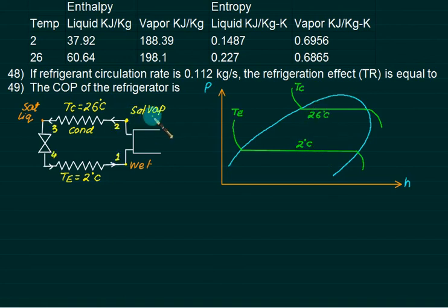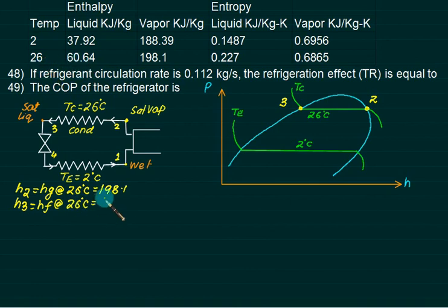The condition is known as saturated vapor. We can locate saturated vapor or saturated liquid on these lines. Point 2 is saturated vapor at temperature 26, so this point is fixed. The enthalpy value equals Hg at 26, which is 198. For saturated liquid, this is point 3 at 26. Value of H3 equals Hf at 26 degrees Celsius, which is 60.64.